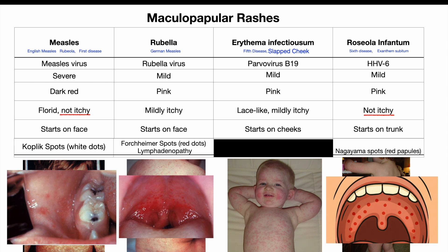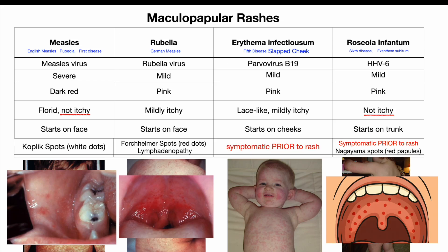There is a very significant clue in helping us distinguish roseola and erythema infectiosum from the other exanthems: both of these diseases become asymptomatic once the rash breaks out. Often, parents come with a child who is otherwise now completely fine, the fever has settled, but there is a maculopapular rash which either started on the trunk in the case of roseola, or on the cheeks — like slapped cheeks — in the case of erythema infectiosum. This fever-breaking pattern followed by a rash after a few days of cold-like symptoms is a dead giveaway for roseola infantum and erythema infectiosum.